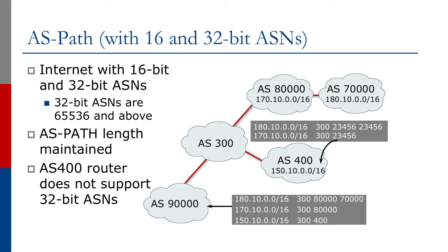Why does 23456 appear? AS400 routers don't support 32-bit AS numbers, so they can't handle numbers bigger than 65535 for the ASN and must represent them some other way. Assuming AS300 is also only supporting 16-bit AS numbers, when AS300 sets up the BGP session with its neighbor in AS80,000, capability negotiation occurs at the start. Because AS300 can't configure a BGP neighbor with 80,000 since it exceeds 65535, the operator must use the transition AS and sets up his neighbor with 23456.